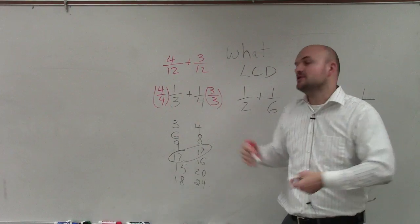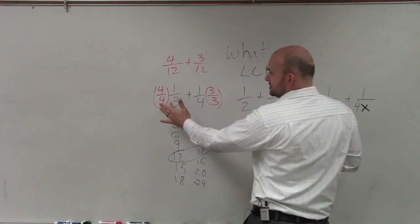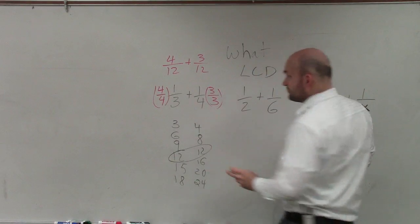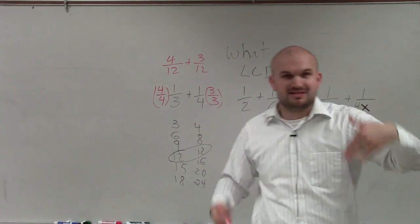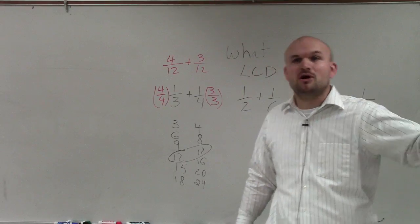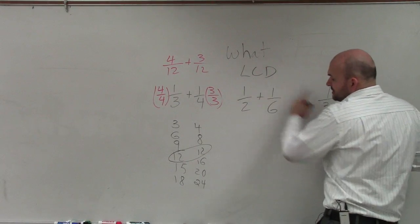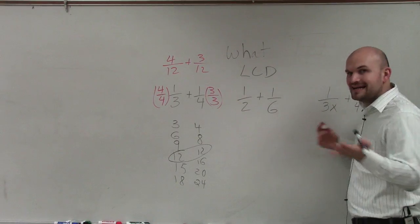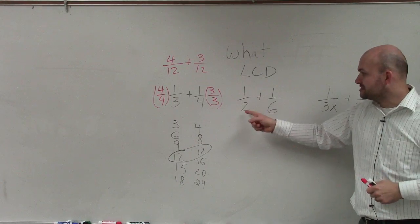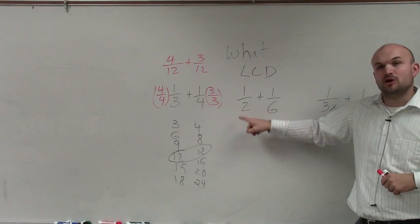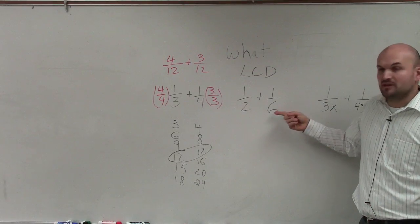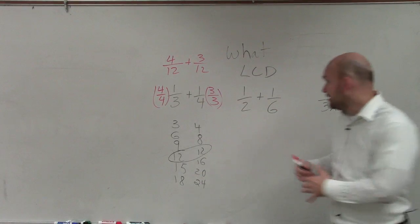So you can see that in this case now they have the common multiple. Now what you notice is oh I'm just multiplying four times three and three times four, and a lot of times students just get that memorized. But that's not always the case. The least common multiple or least common denominator between two and six is not twelve, it's actually six, because if you were to list the multiple, six is a multiple of two and the first multiple of six is obviously six.